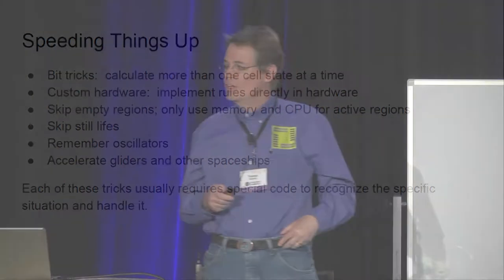Multiplication is like that. There's a lot of tricks we can use to speed things up. Bit tricks, skipping empty space, looking for oscillators, recognizing gliders. All this hack adds complexity to the code. Eventually we actually end up with diminishing returns where this complexity slows us down.